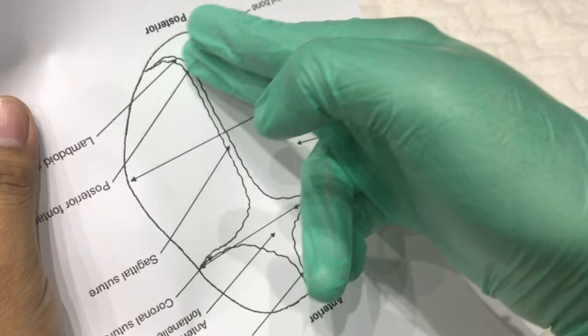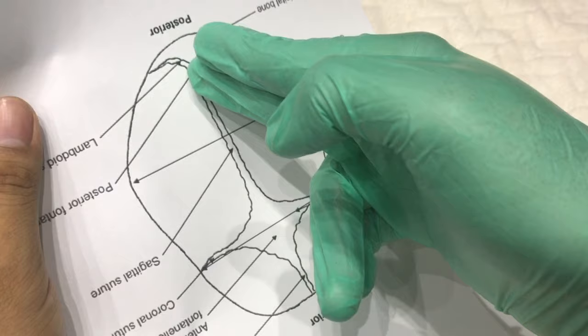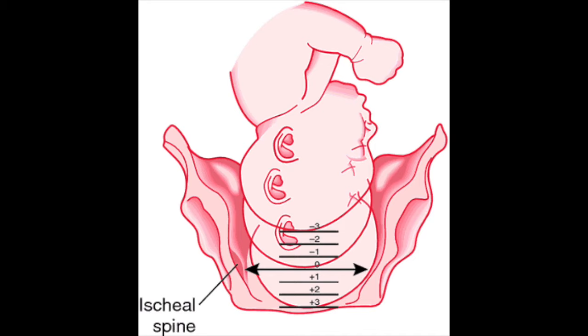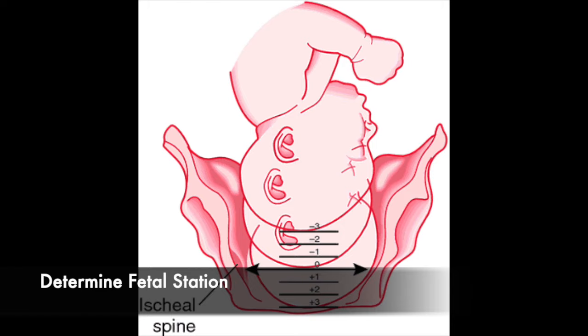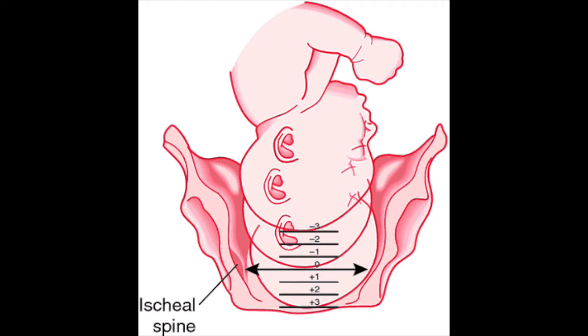Identify the triangular-shaped posterior fontanelle and the diamond-shaped anterior fontanelle. The station, or extent to which the presenting part has descended into the pelvis, can also be established. Determine the location of the lowermost portion of the fetal head in relation to the ischial spines.